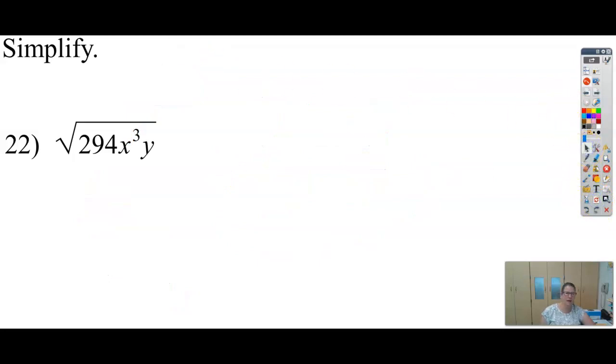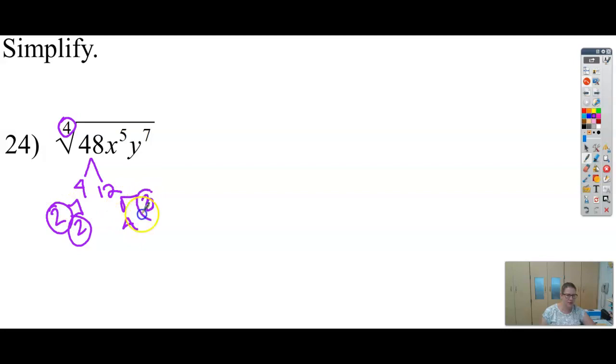Okay? So let's just do one last one. Let's find one. Okay, so this is a 4th root. So I need to have 4 copies underneath in order to bring 1 out. Let's just break down 48. So that's 4 times 12. 4 is 2 times 2. 12 is 4 times 3. And 4 is 2 times 2.